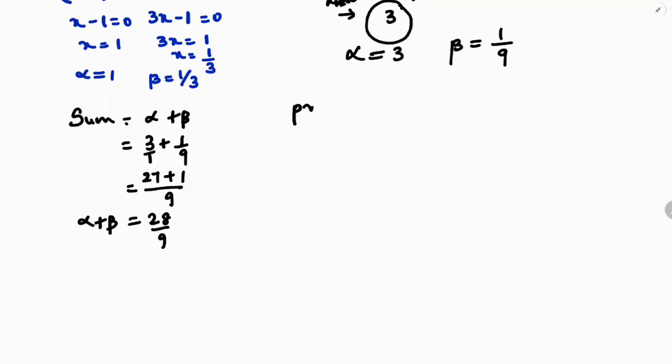Now product of the zeros, which is α × β: 3 × 1/9. If you cancel, 3 × 1, 3 × 3, it is 1/3. So α × β = 1/3.